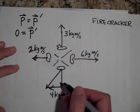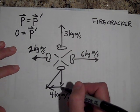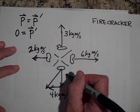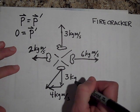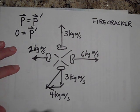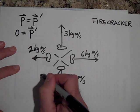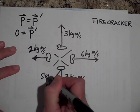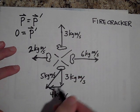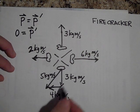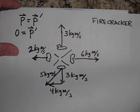If you understood that, then you know the Y-component of the fourth chunk has to be 3 kg·m/s. Since momentum is a vector quantity, the magnitude is 5 kg·m/s — because of a 3-4-5 right triangle.